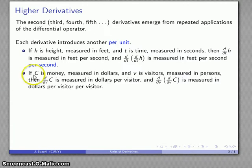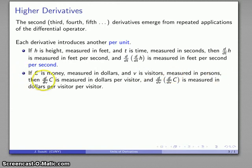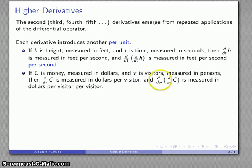Similarly, if c is money measured in dollars and v is the number of visitors measured in persons, then the first derivative dc/dv is measured in dollars per visitor. The second derivative is measured in dollars per visitor per visitor, introduced by that next application of the derivative.